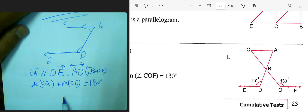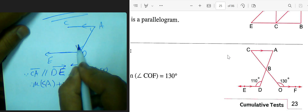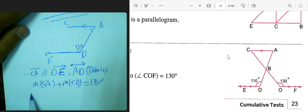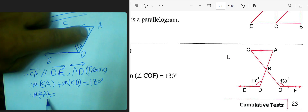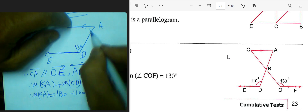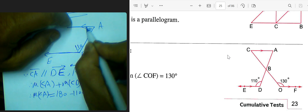These are supplementary angles, and we are given that this angle measures 110 degrees. Therefore, angle A equals 180 subtract 110, which gives 70 degrees.